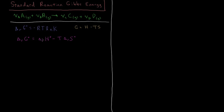But that also isn't very helpful unless we can figure out both of those values. So what we're going to do — the same approach we use for standard enthalpy and entropy of reaction — is look at the Gibbs energy of formation. We know that the Gibbs energy of formation equals the enthalpy of formation minus temperature times entropy of formation, all standard. Since we have tables of standard enthalpy of formation and standard entropy of formation, we can construct tables of standard Gibbs energy of formation, and from that calculate our standard Gibbs energy of reaction.